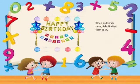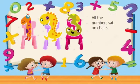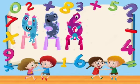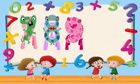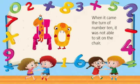When his friends came, Rahul invited them to sit. All the numbers sat on chairs. They were all happy — 4, 5, 6, 7, 8, 9, and last is 10. And when it came to the turn of number 10...